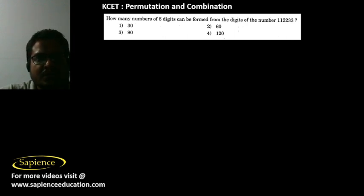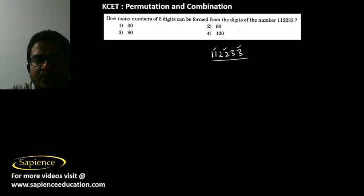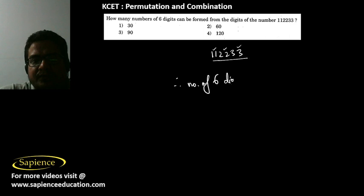Here it is told: how many numbers of six digits can be formed from the digits of the number 1,1,2,2,3,3? We have six digits where two are 1, two are 2, and two are 3. Therefore the required number of six-digit numbers that can be formed by rearranging them will be calculated as follows.